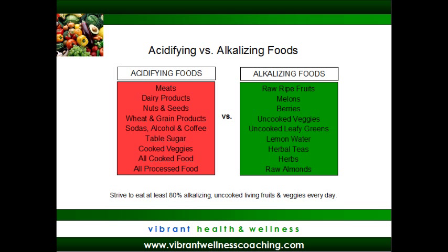Looking at acidifying foods versus basic alkalizing foods, you will see that foods that promote inflammation — also known as acidosis — include meat, dairy, grains, soda, alcohol, coffee, white sugar, cooked foods, and processed foods. Alkalizing foods include almost all fruits and vegetables, herbs, and herbal teas.